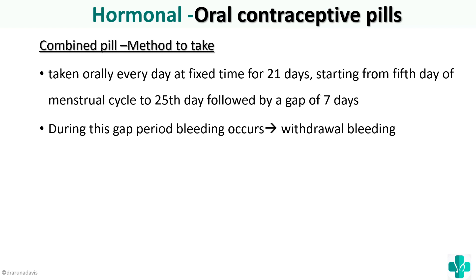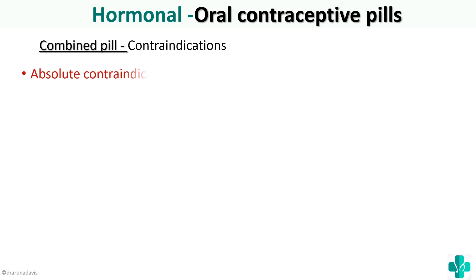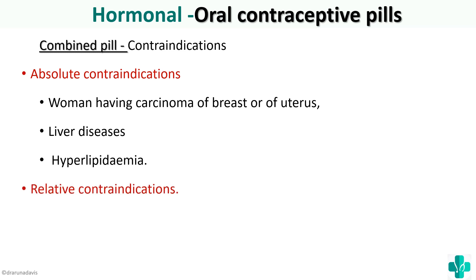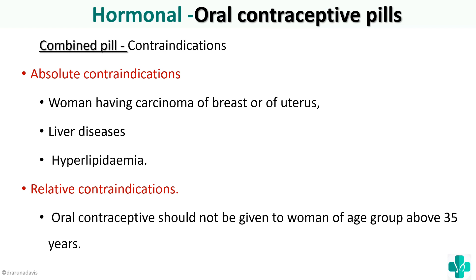The absolute contraindications are: women having carcinoma of the breast or uterus, because OCPs are considered to promote cancer of the breast and endometrium. Also liver diseases, because the pills are harmful to the liver. And hyperlipidemia, because OCPs can increase body cholesterol levels. The relative contraindication is that they should not be given to women above 35 years of age, as the risk of carcinoma breast is higher in that group.